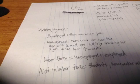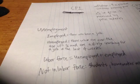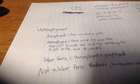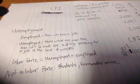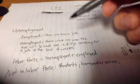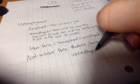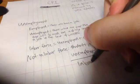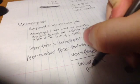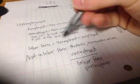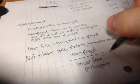The labor force equals the employed and the unemployed added up — the sum of those two. People not in the labor force but in the adult population are people over the age of 16 who are full-time students, homemakers, or retirees. The unemployment rate is the number of unemployed over the labor force, which is just the unemployed plus the employed.